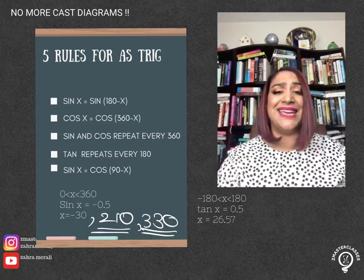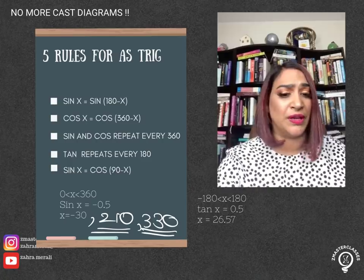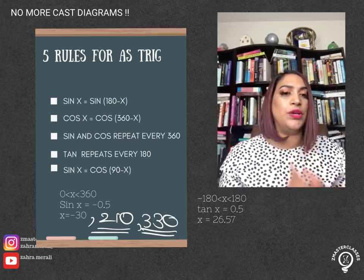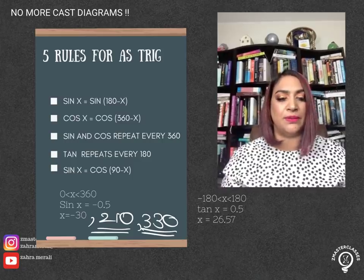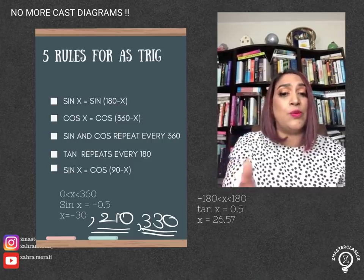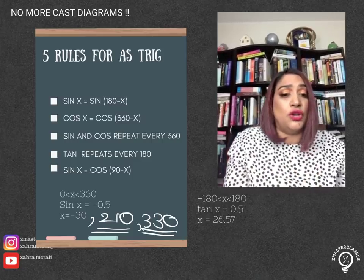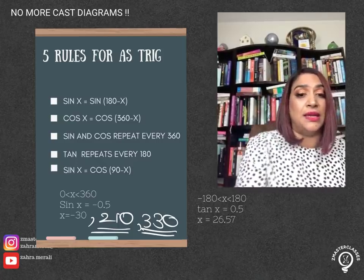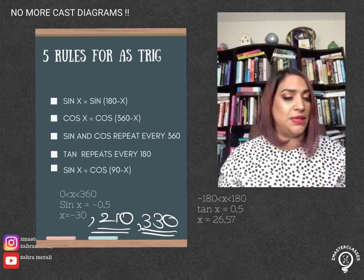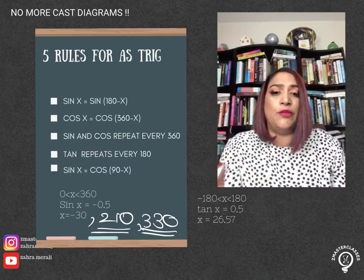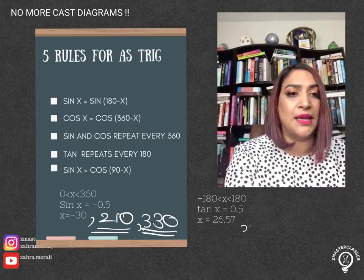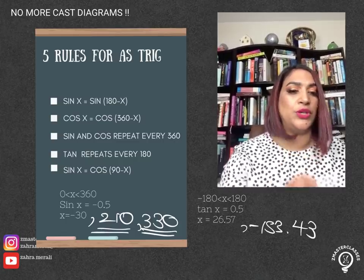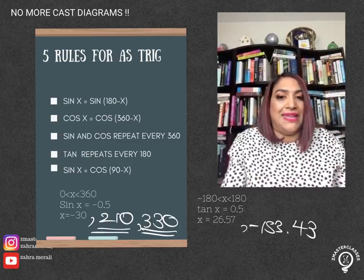Let's take another example. We've got tan x equals 0.5. Inverse tan of 0.5 in your calculator will give you 26.57. Now this repeats every 180, so minus 180 or plus 180. In this case, if we add 180 we go outside our range. If we minus 180, we get minus 153.43, which is in our range. Nice and easy.